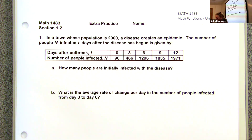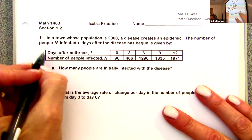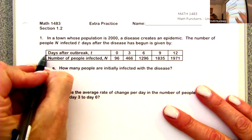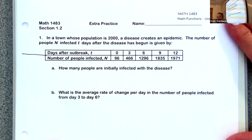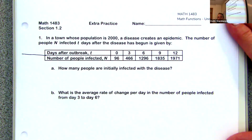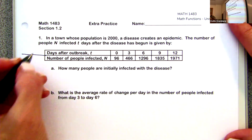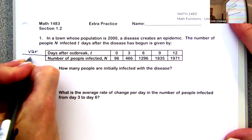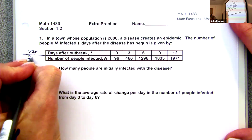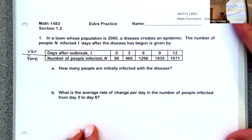When we're given a horizontal table, we need to identify which is the function and which is the variable. Variable is always on top, and function is always on bottom.